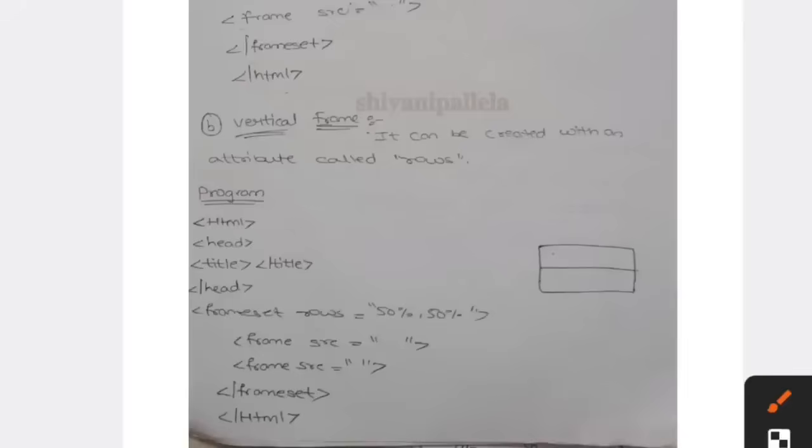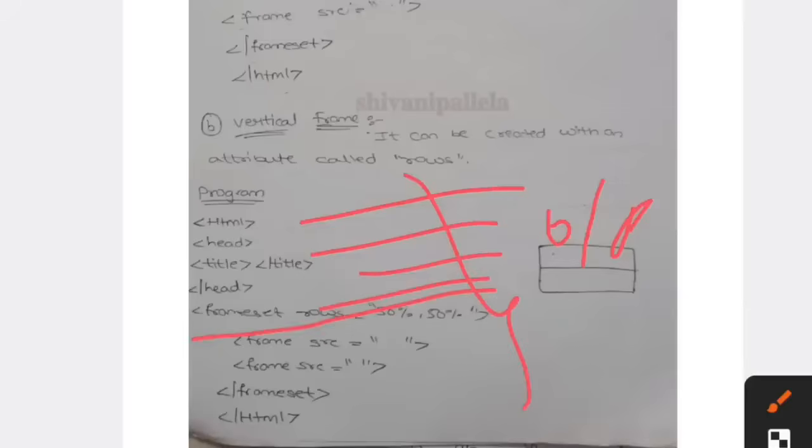And vertical frame program is this. This is the output, and this is the program. Same HTML, head, title, title close, head close. And frameset - here everything you need to write it here.